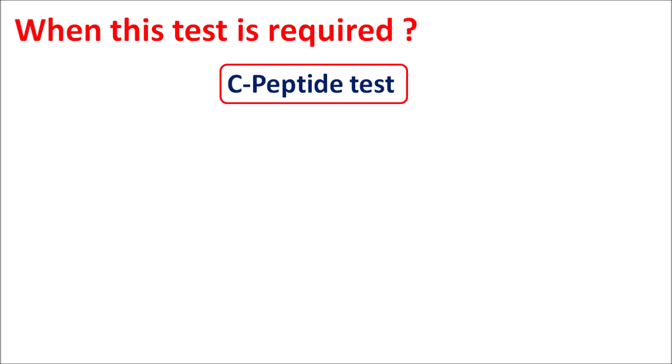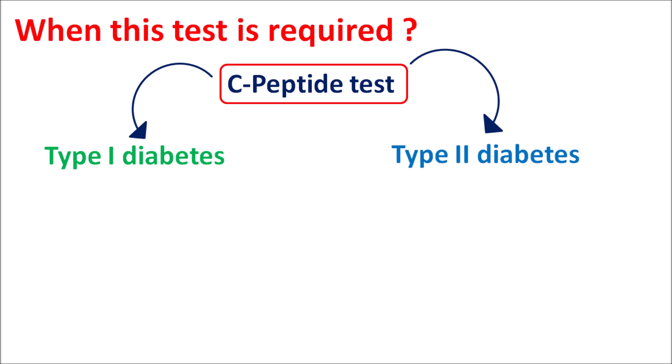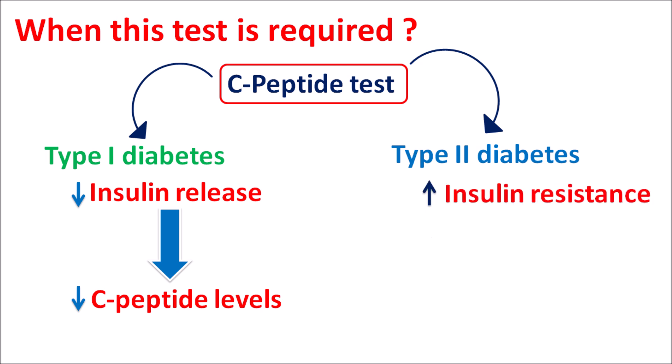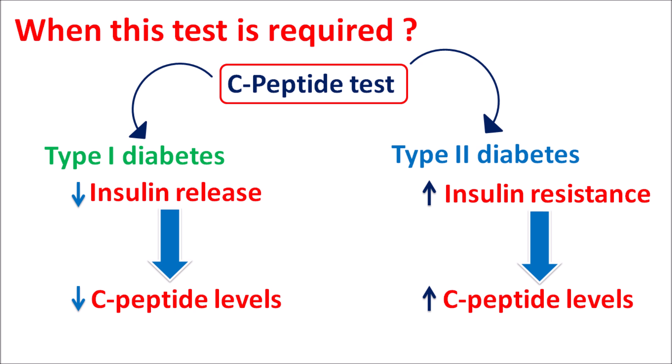One important indication of the C-peptide test is to differentiate whether a patient has type 1 or type 2 diabetes. In type 1 diabetes, there is auto-destruction of pancreatic beta cells, resulting in decreased insulin release, so C-peptide levels are reduced. In type 2 diabetes, insulin is intact but not working properly, resulting in increased insulin resistance, and we can observe elevated levels of C-peptide due to increased insulin secretion.